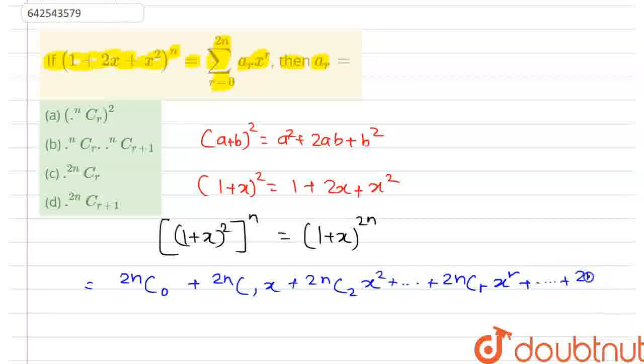Now from here, we got the general term as ²ⁿCᵣxʳ.